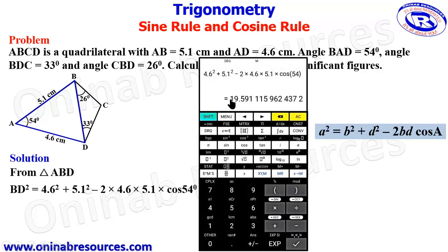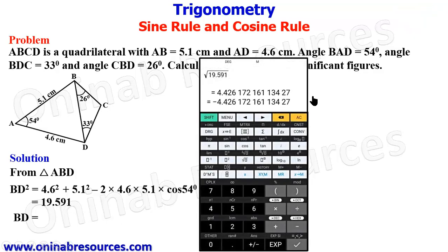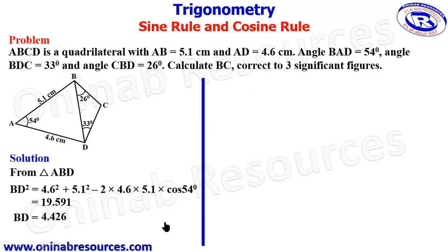Putting this in our calculator, we have our answer to be 19.591 to three decimal places. So to get our BD, we are going to find the square root of 19.591, which gives 4.426.